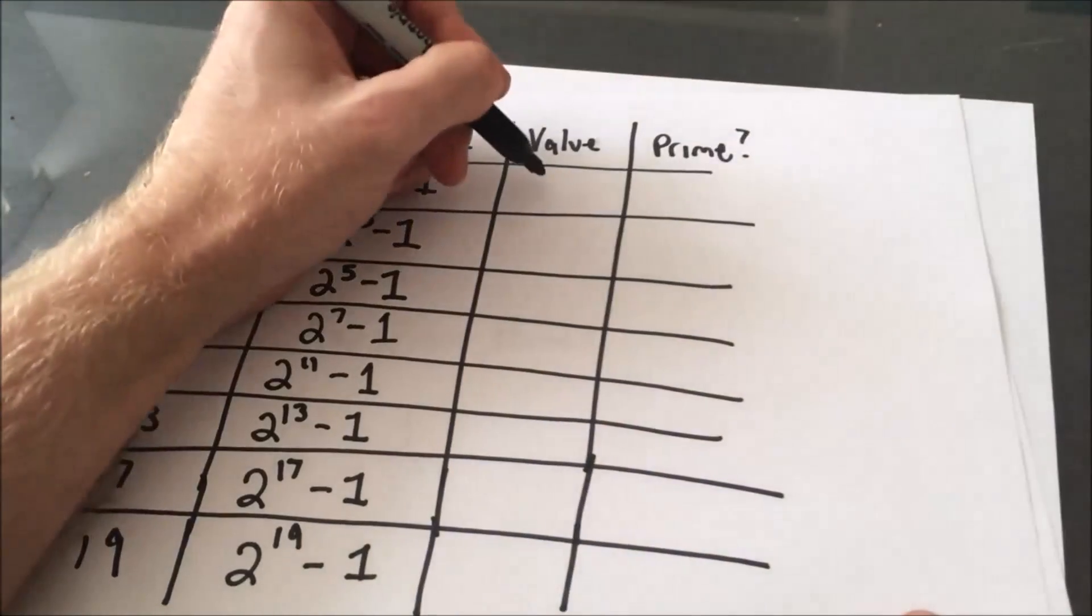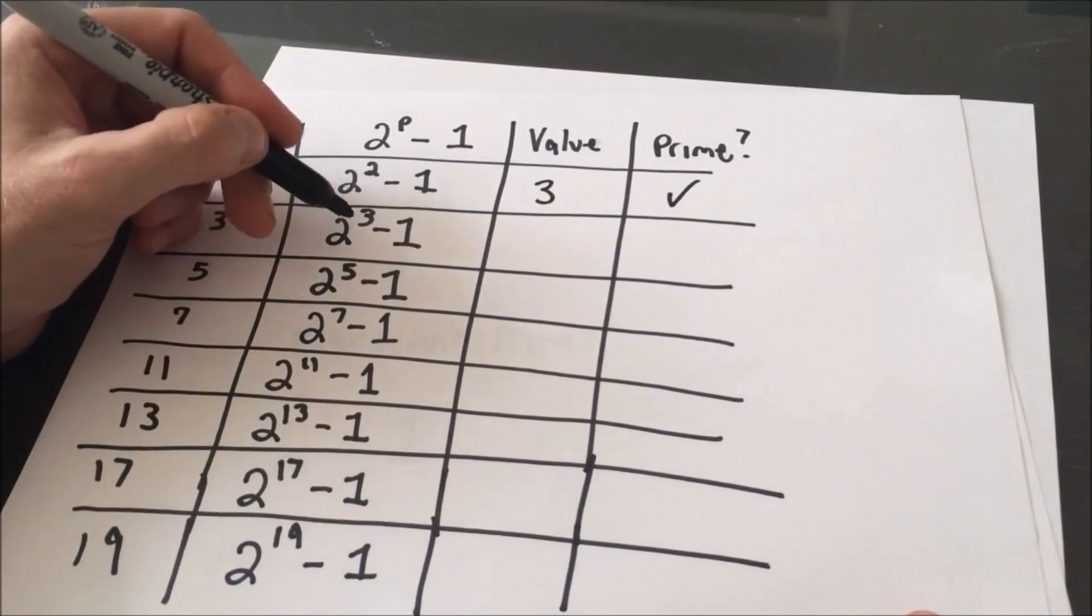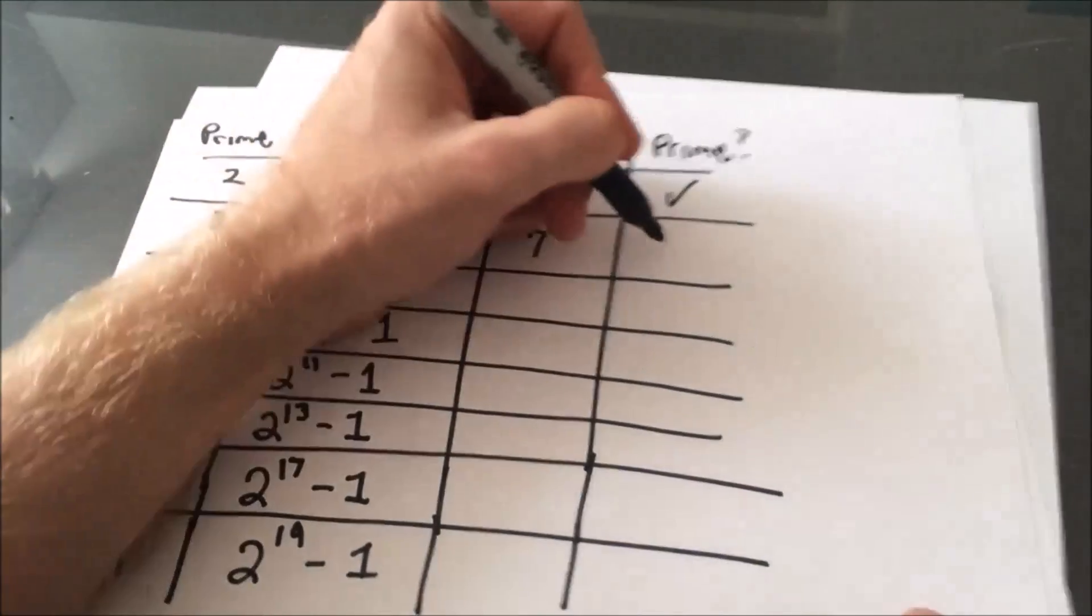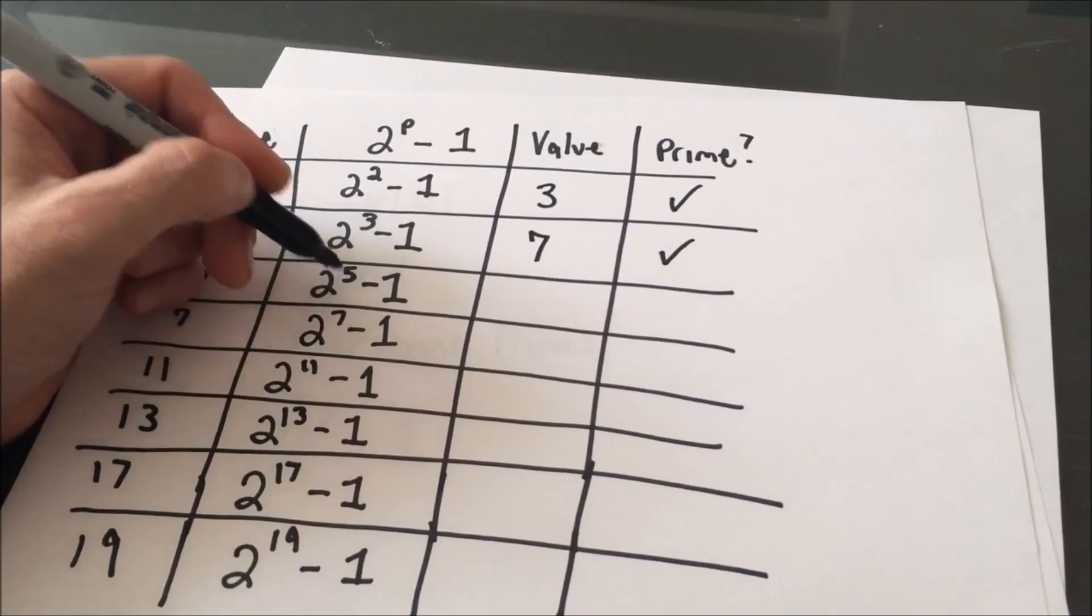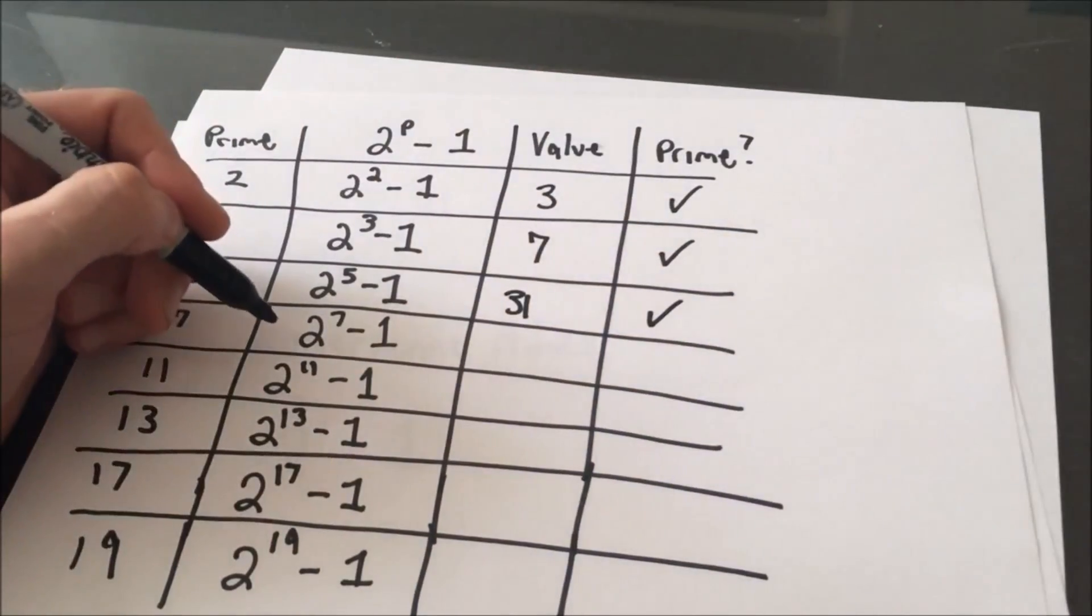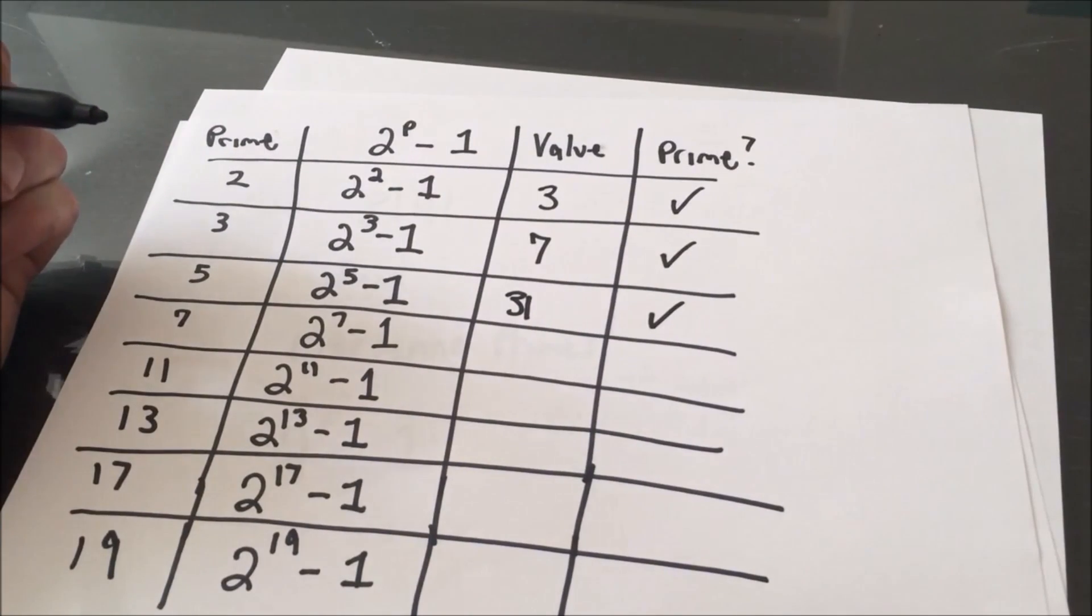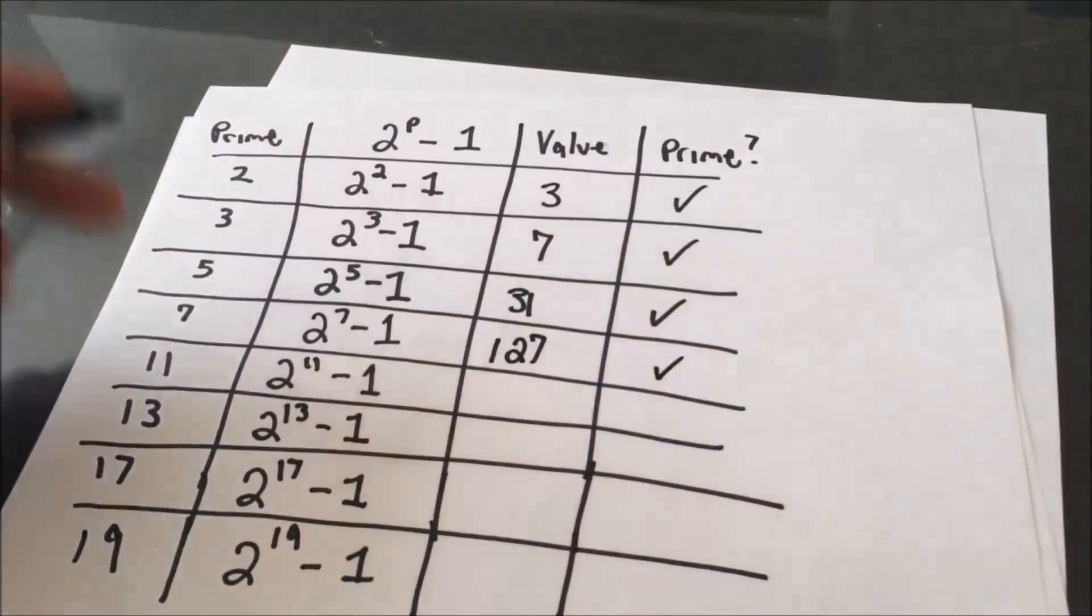Well, 2 to the second minus 1, that gives us 3. That's definitely a prime number. 2 to the third minus 1, that's going to give us 7, which is also a prime number. 2 to the fifth minus 1, that's going to give us 31, which is a prime number. 2 to the seventh minus 1, that gives us the value 127, which is also a prime number.